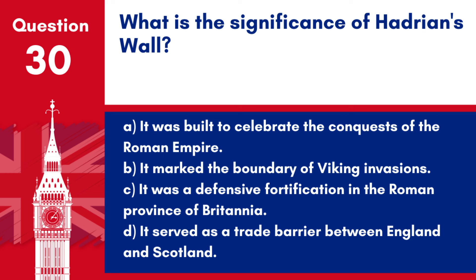Question 30. What is the significance of Hadrian's Wall? a. It was built to celebrate the conquests of the Roman Empire. b. It marked the boundary of Viking invasions. c. It was a defensive fortification in the Roman province of Britannia. d. It served as a trade barrier between England and Scotland.